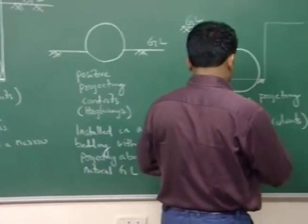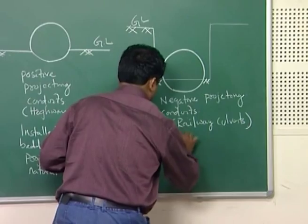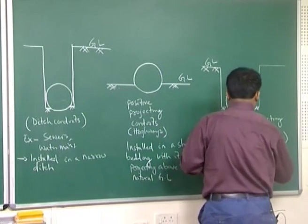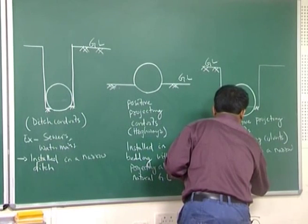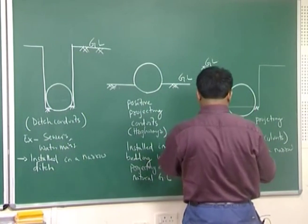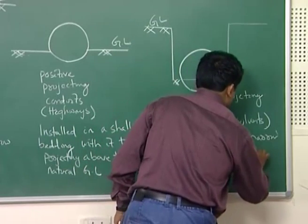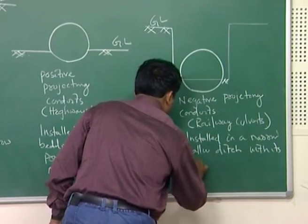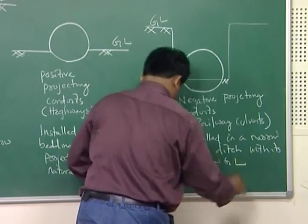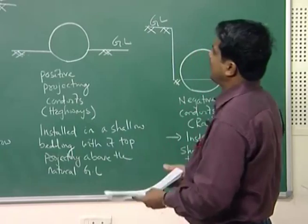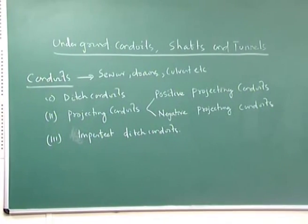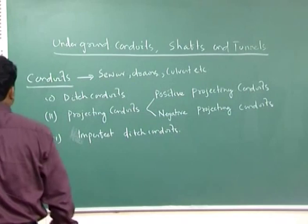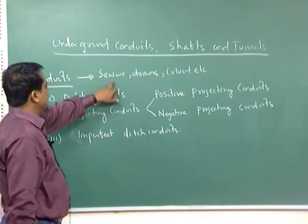Similarly, in the case of negative projecting conduits, the conduit is installed in a narrow shallow ditch with its top below the ground level, which is then covered with an embankment. The classification of these conduits into three parts is: ditch conduits used for sewer lines, drainage, and culverts.